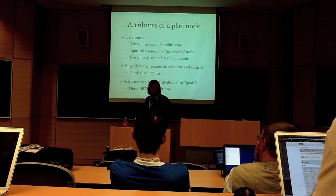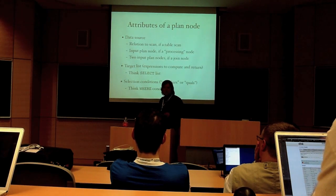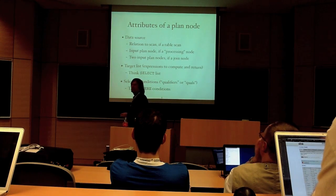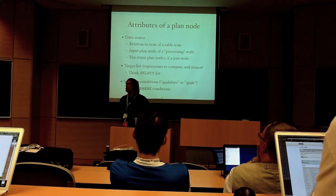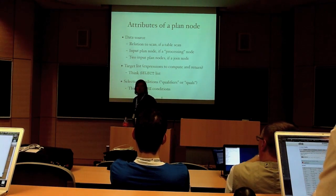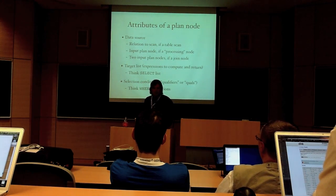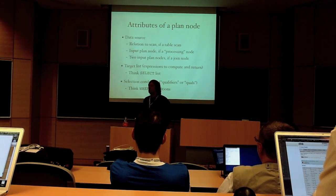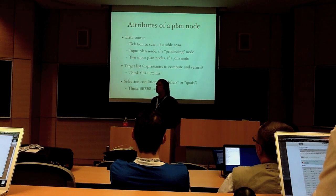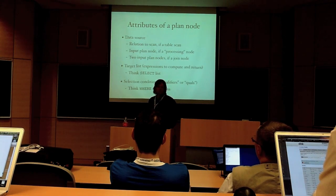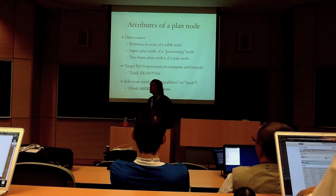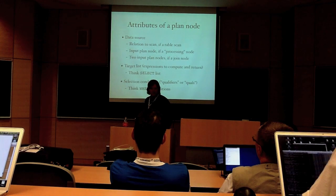And a plan node has got some attributes that pretty much all plan nodes have these. There's a data source, which can be a relation scan, if it's a table scan. Maybe there's also an indication of what index to use for that. If it's a processing node, like, say, a sort step, then it's going to have a child plan node that provides its input. Or if it's a join node, it will have two children that provide the input to be joined.